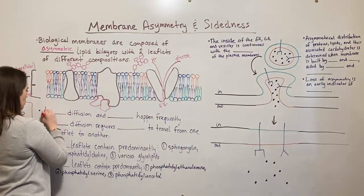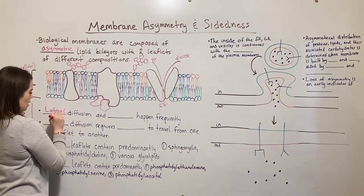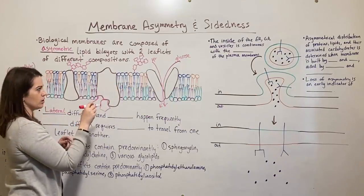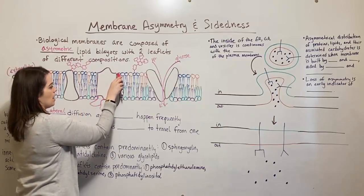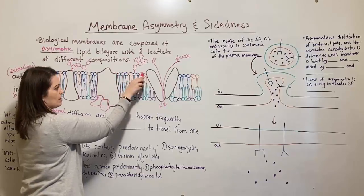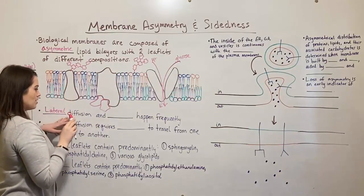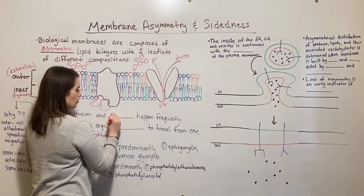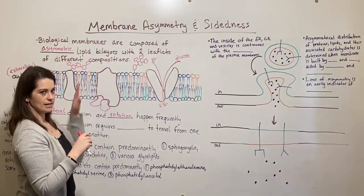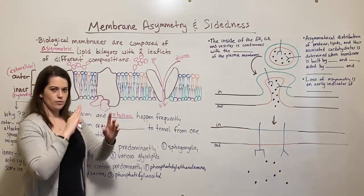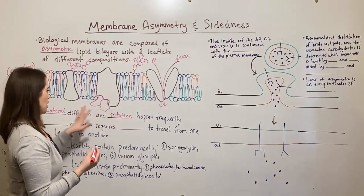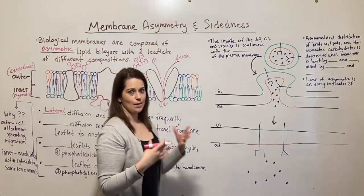The first is lateral diffusion — moving within one leaflet. So a phospholipid or a protein moving from one position to another within the same leaflet, that's lateral diffusion. There's also rotation, which refers to the fact that these phospholipids are generally able to rotate — they can kind of spin around in place. The lateral diffusion and the rotation happen quite frequently.